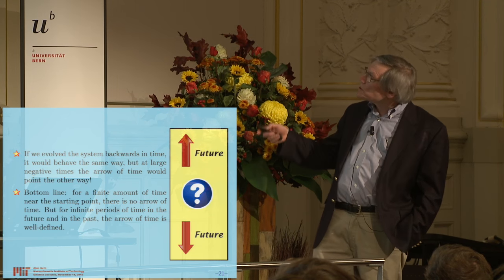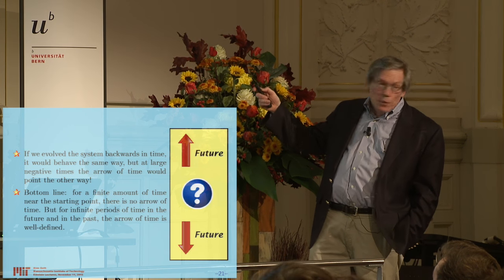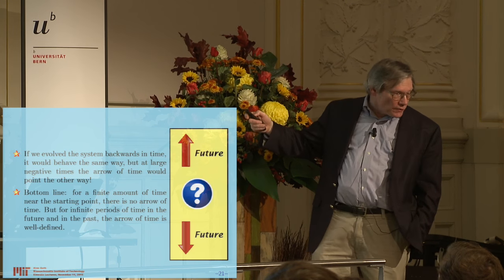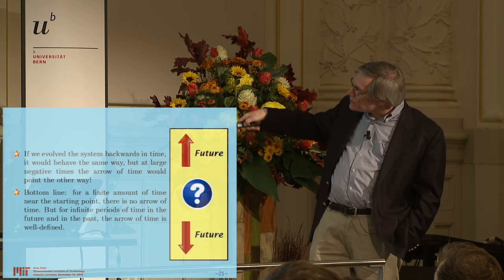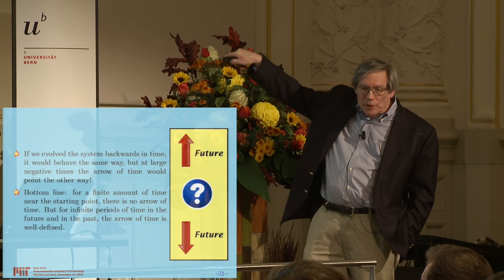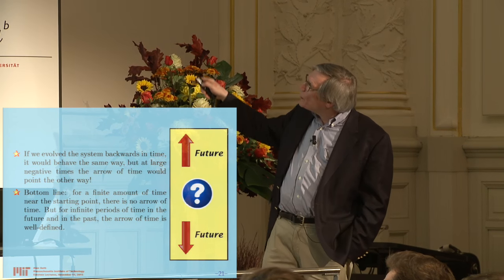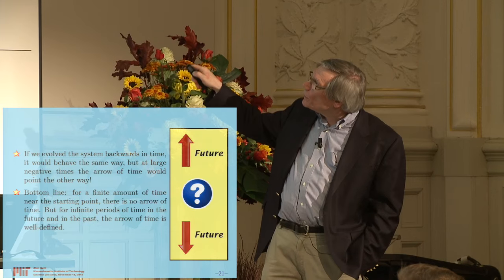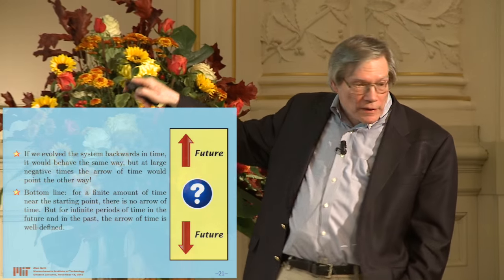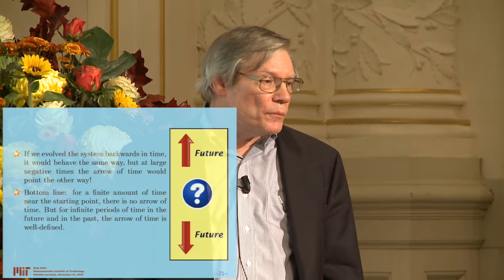If you were living anywhere in the future, you would think there's a well-defined arrow of time going that way — there's an infinite region up here if time continues forever. If you're living in the past, the arrow of time would go this way in our diagram, but to you it would look completely normal. Only for a finite region of time in the middle — which therefore, if you were choosing time randomly, would have zero probability — would the arrow of time not be well-defined.